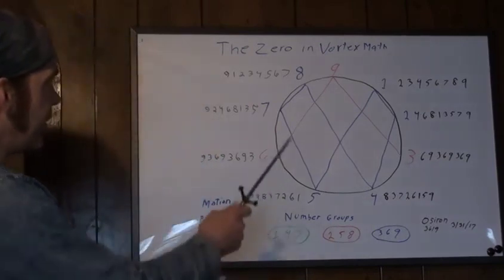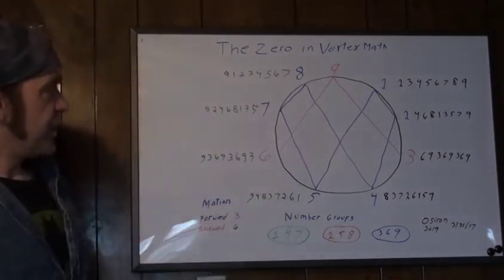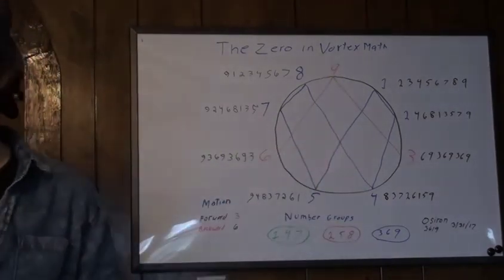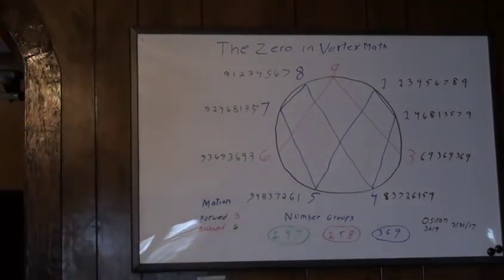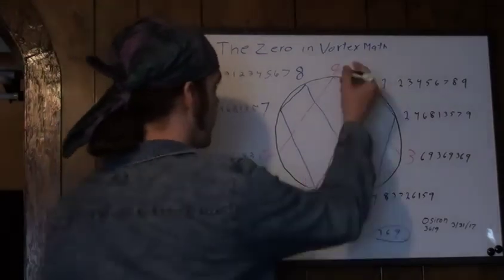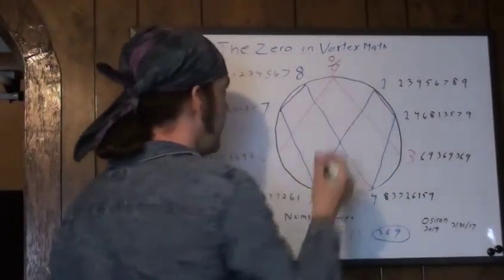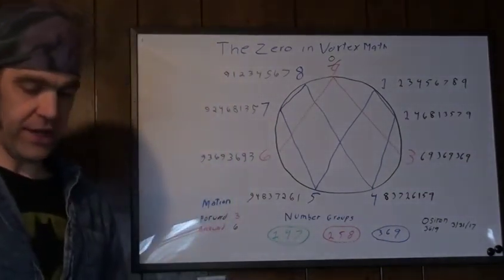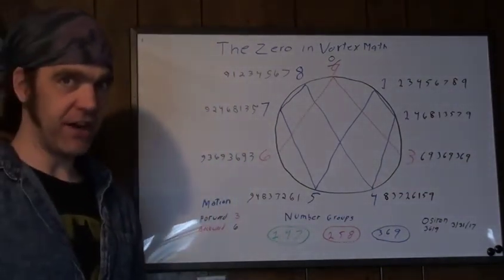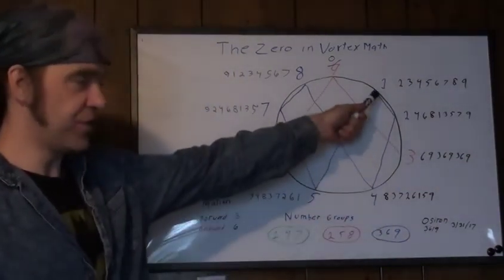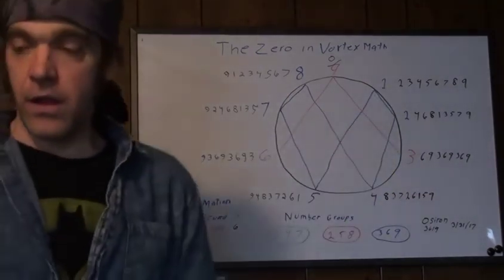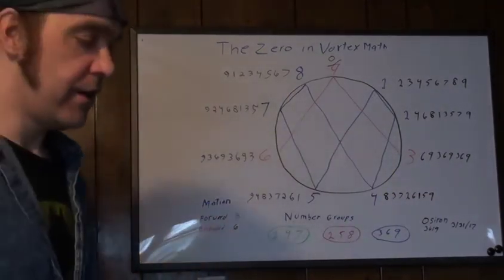So this is it. The zero in vortex math, the implication of it. You really, this is what it's doing. This nine here fills in for zero. And the implication of that nine is suggested by the position of the one. That's all. So thank you, and namaste.